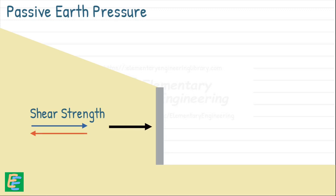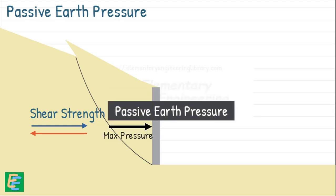As a result, the horizontal pressure acting on the wall keeps increasing. If the wall keeps pushing into the soil, a point comes where the soil's shear strength is completely used up. At this stage, the soil can no longer resist, it fails. And at this moment, the pressure on the wall is at its maximum. This highest possible lateral pressure acting on the wall is called passive earth pressure.